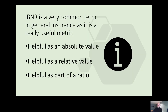So why is IBNR such a common term? Well, it's because it's a really useful metric. It's helpful as an absolute value — for example, all things being equal, it should be highest for the most recent origin periods, and when it goes negative it can be concerning to management, though that doesn't mean it isn't necessarily correctly set.